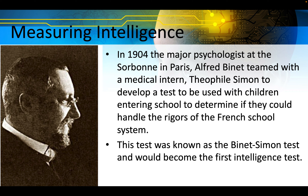In 1904, the major psychologist at the Sorbonne in Paris, Alfred Binet, teamed up with a medical intern, Theophile Simon, to develop a test to determine if children could handle the rigors of the French school system. This test was known as the Binet-Simon test and would become the first intelligence test. In 1916, Louis Terman from Stanford University adapted the Binet-Simon test for use in the United States, and would spend the rest of his life studying bright children, starting the talented and gifted movement.